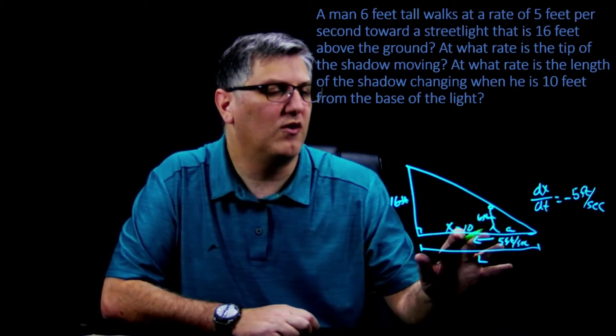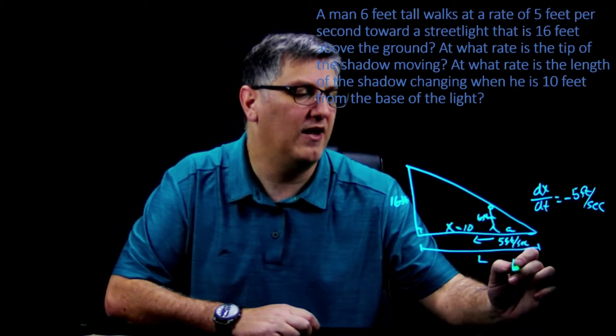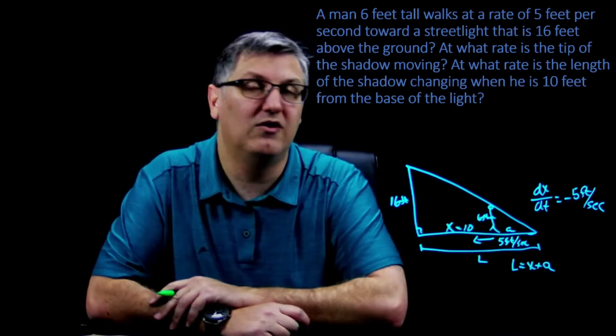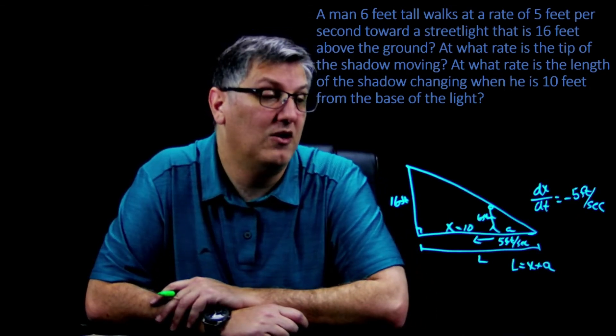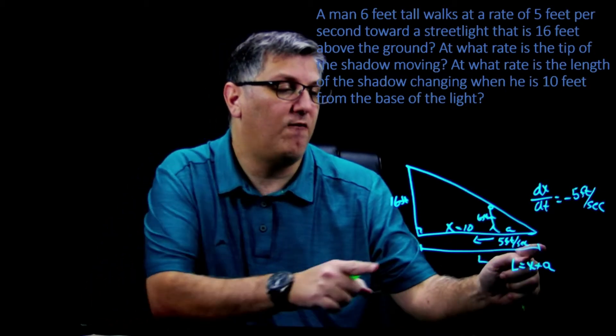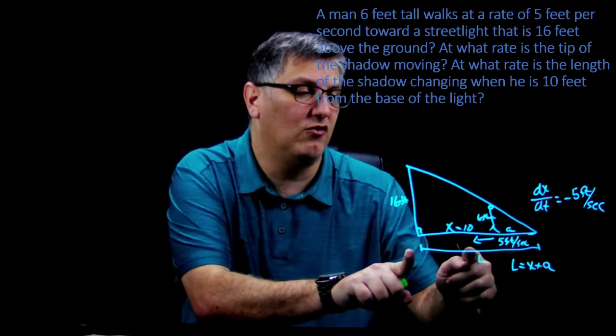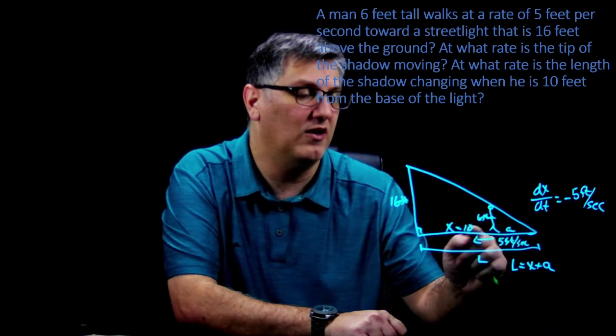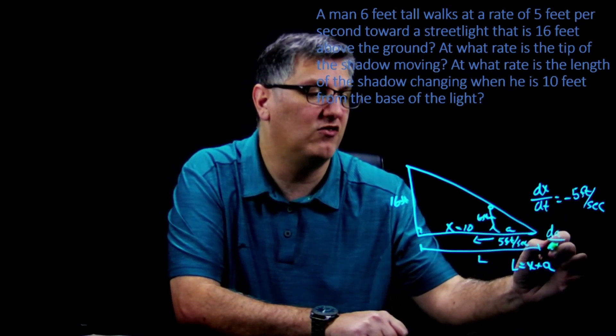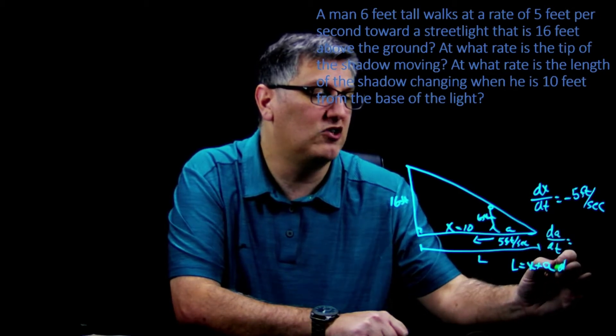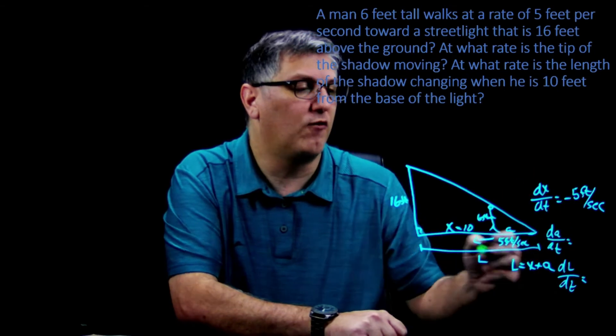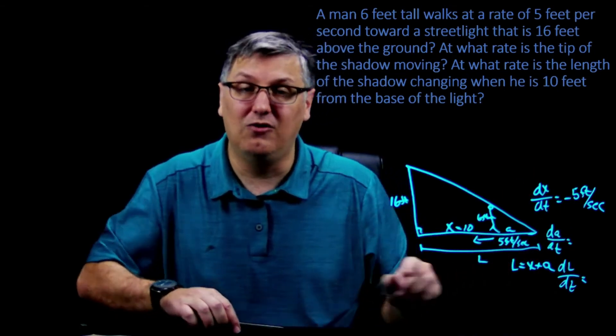From this equation we can extrapolate that L equals x plus a. This is just our segment addition postulate from geometry. So we're going to use all of this to solve this problem to find how fast this length is changing as he's walking and how fast is the tip of the shadow moving. So what we're really looking for is a change in a over change in time, and we're going to look for a change in L over change in time.